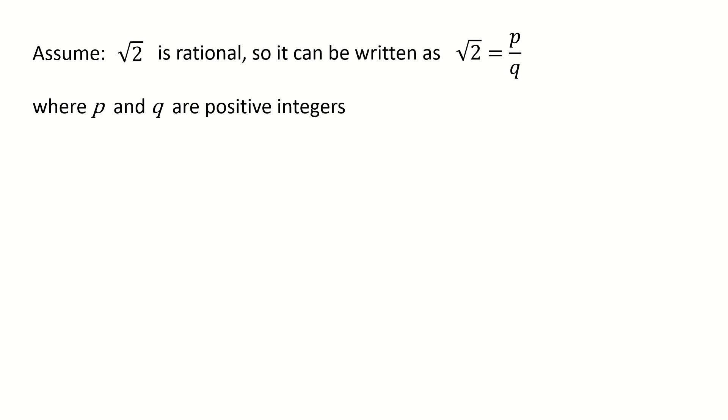So we will prove it by making contradictions. Assume √2 is rational, so it can be written as p over q, where p and q are positive integers. Then we can construct a right-angle triangle with two sides equal to 1 and the hypotenuse equal to √2.